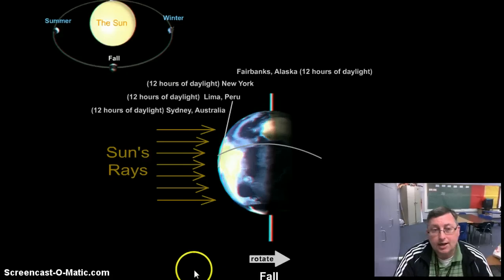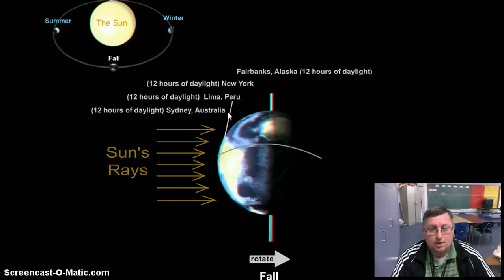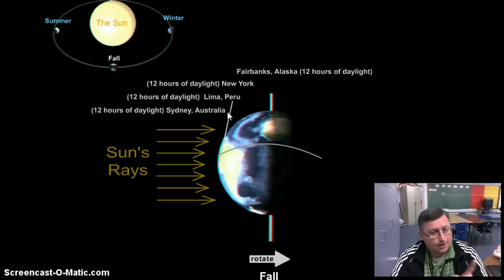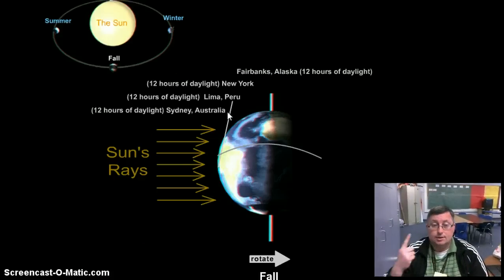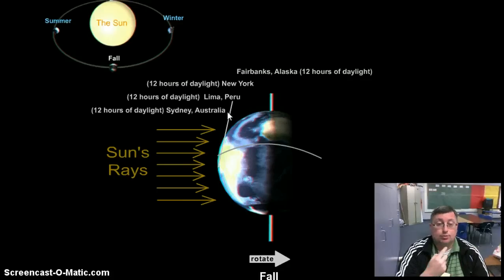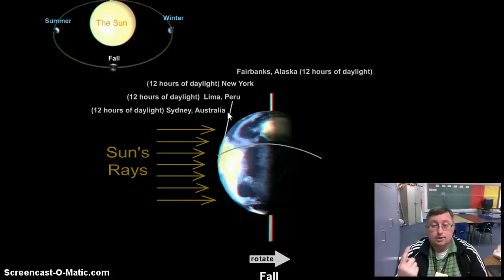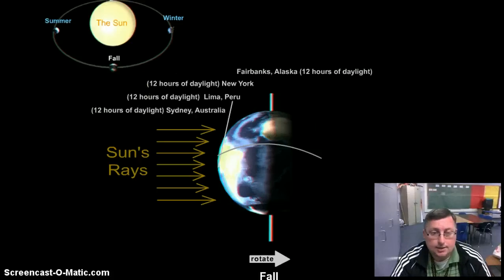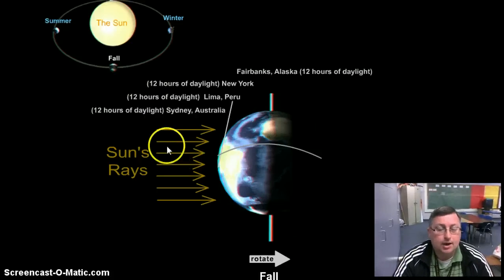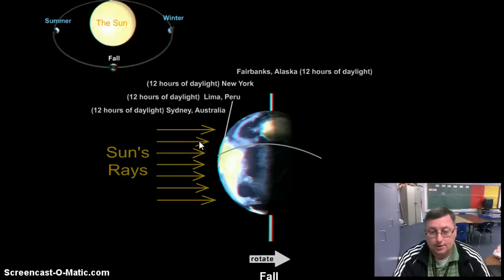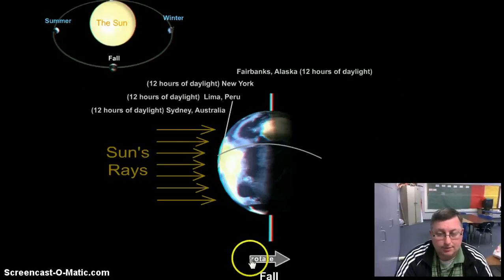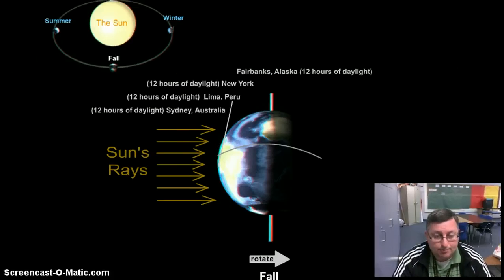So I think that's it. Main thing we want to get out of this: what causes seasons. Day and night are caused by the Earth rotating or spinning. The year is caused by the Earth revolving around the sun. And the seasons are caused by the Earth's tilt as it's making that trip around the sun in about 365 days. So that's what you need to get out of it. Good luck.